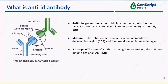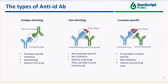So what is anti-idiotype antibody? To put it in simple words, it is an antibody that is able to specifically recognize antibody drug through the variable region. This specificity makes it a perfect tool to measure antibody drug, and its resemblance to anti-drug antibody makes it a good reference for measurement of immunogenicity. Based on the recognition interface on the drug, anti-ID can be further categorized as antigen blocking, non-blocking, or complex specific.